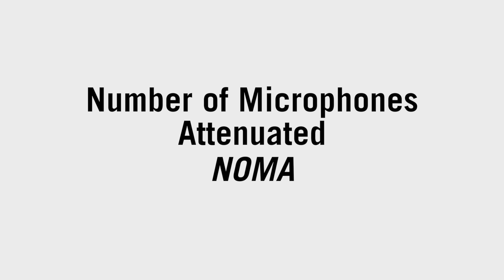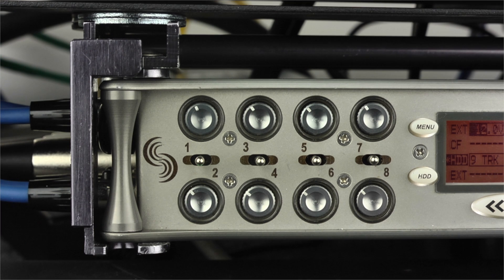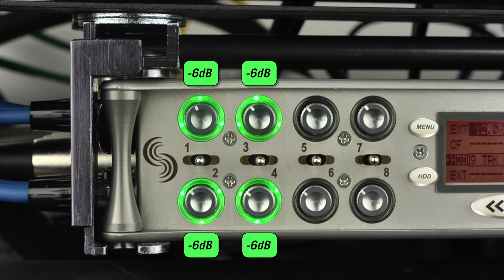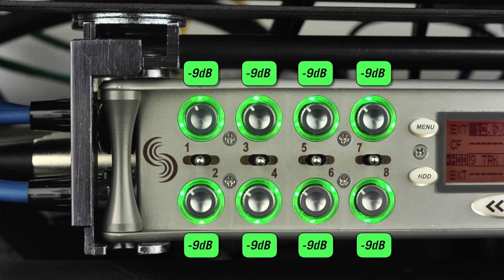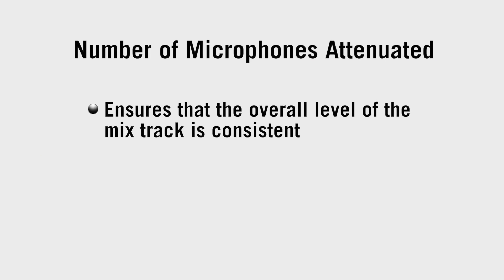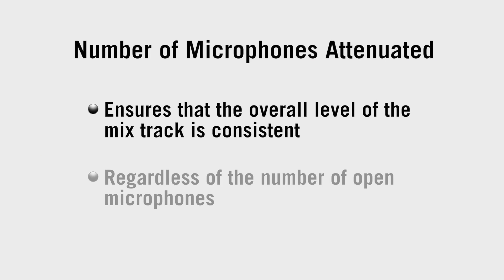The third principle is Number of Microphones Attenuated, or NOM. As the number of open microphones increases, the level of each open input is decreased by 3 dB each time the number of open inputs doubles. This ensures that the overall level of the mix track is consistent regardless of the number of open microphones.